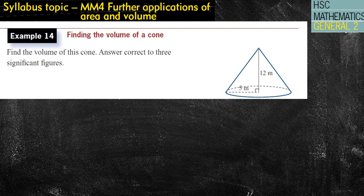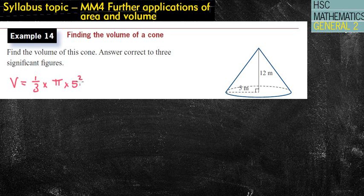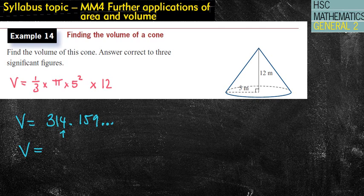Next question. Find the volume of this cone. Answer correct to three significant figures. Once again, the volume of a circular base pyramid or a pyramid is one-third times the area of the base, which in this case is pi times radius squared of 5, so 5 squared. And I'm going to times it by its perpendicular height of 12. I simply jot that into my calculator to get 159 dot dot dot. It has asked for three significant figures, which is the first, second, that's the third significant figure. The one tells me it stays the same. So it's just 314 meters cubed.